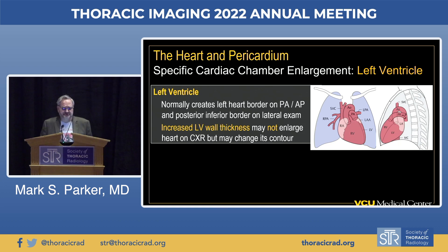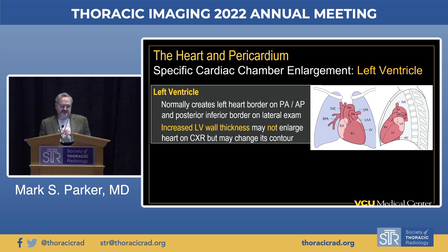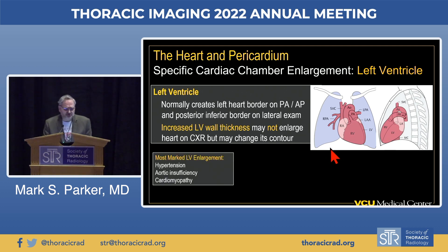Let's look at some specific chambers that enlarge—what they look like and why they enlarge. Beginning with the left ventricle: it creates the left heart border on frontal radiographs and is located posteriorly and inferiorly on lateral radiographs. The myocardium can hypertrophy quite a bit without actually enlarging on the chest X-ray, but you may notice changes in contour morphology. We most often see marked enlargement in the setting of hypertension, aortic insufficiency, and cardiomyopathies.